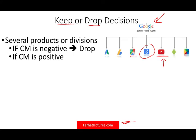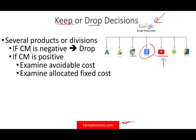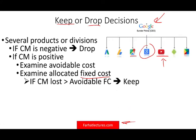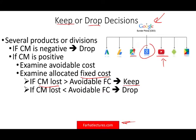If the contribution margin is positive, should you still drop the division if it's not profitable? You have to look at avoidable costs and any allocated fixed costs — what's going to happen to them? If the contribution margin is greater than the avoidable fixed cost, it is covering that cost, so we keep. If the contribution margin is less than the avoidable fixed cost, it's not in our best interest to keep — therefore, we drop.